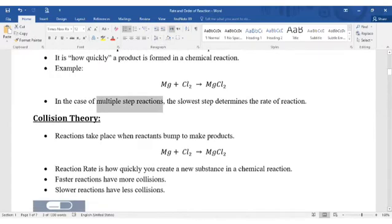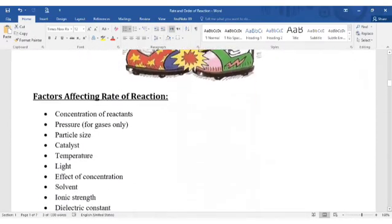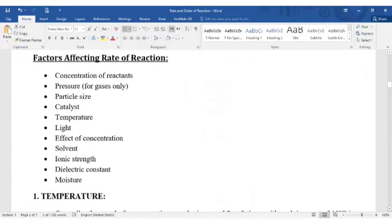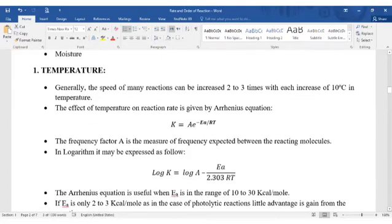And obviously, these are reactions. There are several factors that affect the rate of reaction: concentration of reactant, pressure, particle size, catalyst, temperature, light, effect of concentration, solvent, ionic strength, dielectric constant, and moisture.